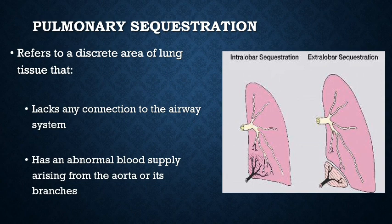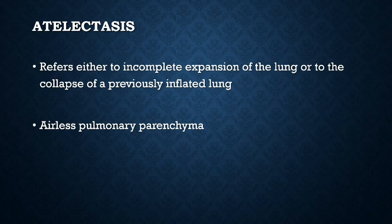Pulmonary sequestration refers to a discrete area of lung tissue that lacks any connection to the airway system and has an abnormal blood supply arising from the aorta or its branches. It can be interlobar or extralobar. Atelectasis refers to incomplete expansion of the lung or the collapse of a previously inflated lung, producing areas of relatively airless pulmonary parenchyma.